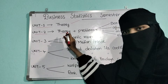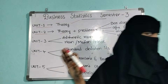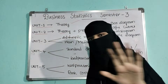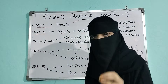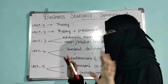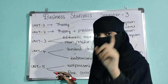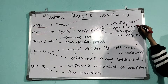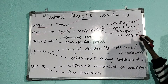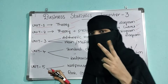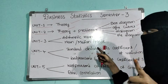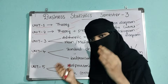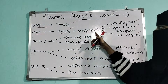From unit 2, you might get theory as well as one problem. I suggest you to give more preference to problems because problems are easy. Business statistics is not a difficult subject — if you know the formulas, you can easily do the complete solution. From unit 2, in problems they might ask you bar diagram, ogive curves, histogram, or pi diagram. Any one they will ask you. I suggest you to go with problems — it is easy. I will upload explanation videos on problems as well.